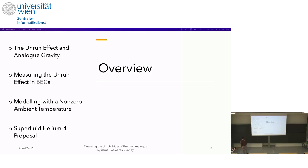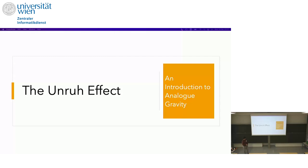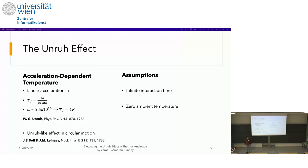So the overview of this talk is I will first introduce the Unruh effect and analog gravity, and then I'll discuss the first proposal that we made in 2020, which was to detect the Unruh effect in a Bose-Einstein condensate, and then move on to modeling with a non-zero ambient temperature, and finally talk about our more recent proposal that we should hopefully submit next week on using superfluid helium-4.